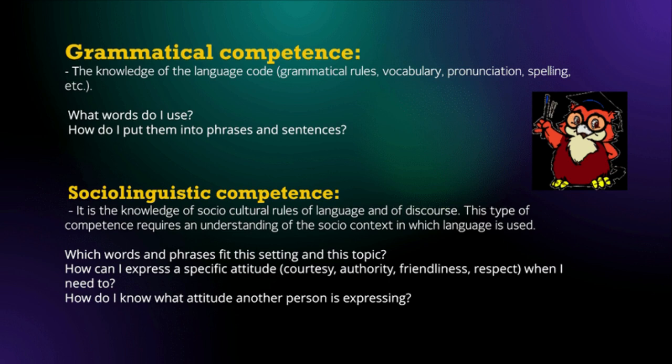Next, sociolinguistic competence. It is the knowledge of sociocultural rules of language and of discourse. This type of competence requires an understanding of the social context in which language is used. Example questions include: Which words and phrases fit this setting and this type of topic? How can I express a specific attitude — courtesy, authority, friendliness, respect — when I need to? How do I know what attitude another person is expressing?